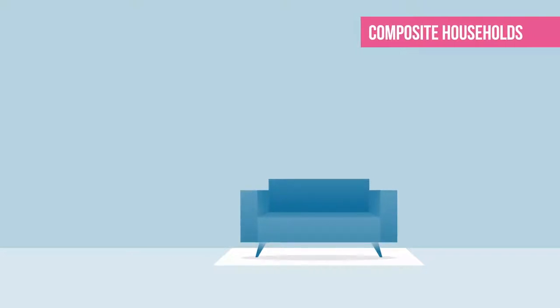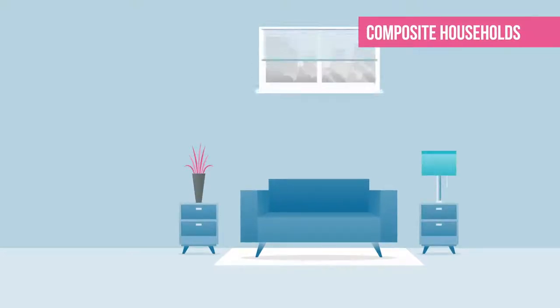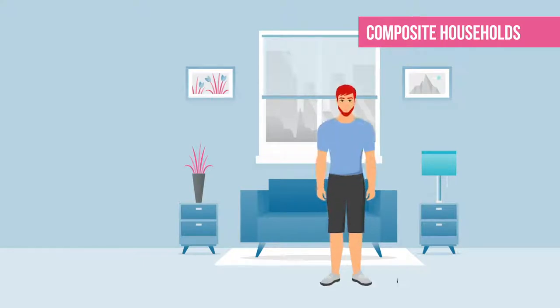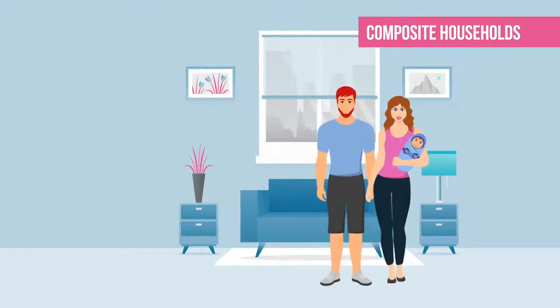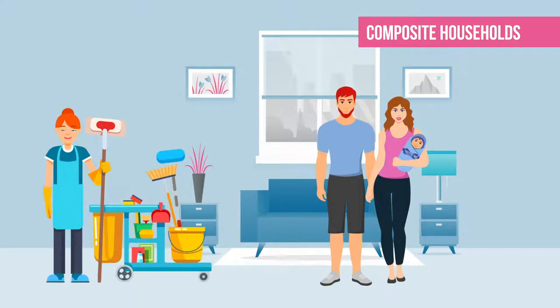Composite households, on the other hand, consist of persons living together who are not all related to each other, such as a married couple with children living in the same household as a live-in maid. In this documentary, we will focus on these non-collective households.